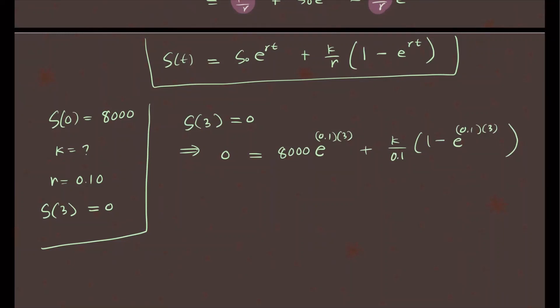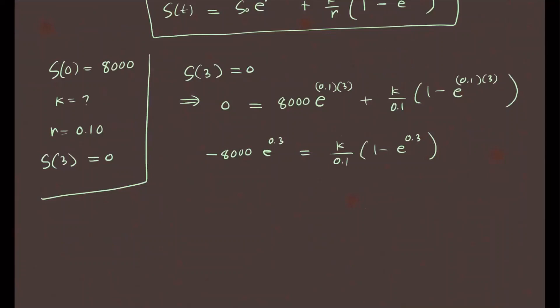Now at this point, you need a calculator to actually figure out the number, but let's just move things around and isolate K so you can punch this in your calculator. I'm going to subtract 8,000 times e to the power of 0.3. So this gives me negative 8,000 times e to the power of 0.3 equals K over 0.1 times 1 minus e to the power of 0.3. Now I divide by that number and multiply by 0.10, so that gives me negative 8,000 times 0.1 times e to the 0.3 divided by 1 minus e to the power of 0.3. That is K.